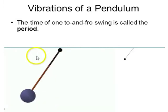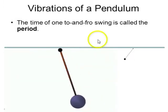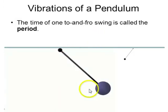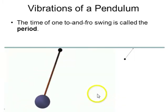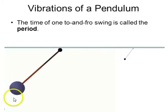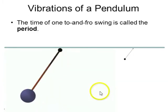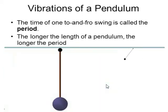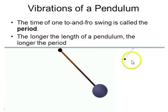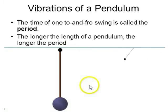A pendulum is something that vibrates. The period is defined as the time it takes for a pendulum to swing back and forth one time. For a pendulum, the longer the length of the pendulum, the longer the period. This mass on a string has a short period. This mass on a longer string has a longer period.